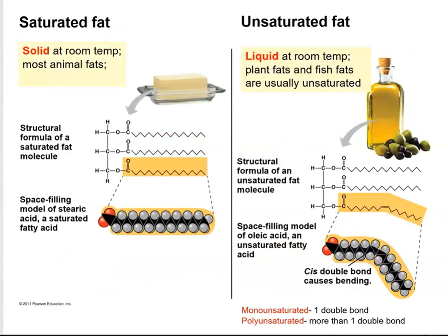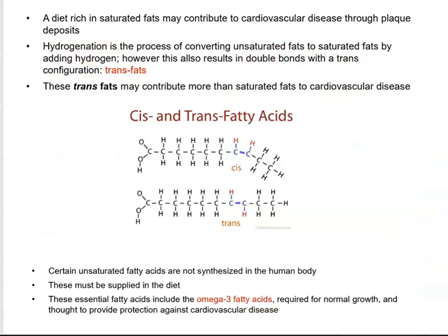What properties do we get because of the different number of bonds? Saturated fats have no double bonds, so they can compact really nice and tight. They come close together and therefore will be solid at room temperature — most animal fats are going to be solid. If you look at unsaturated fat, the double bond causes a bend or kink in that fatty acid tail, and this kink is going to prevent the fats from solidifying at room temperature, so they're going to be liquid. Regarding cis and trans fatty acids, the slight difference in the hydrogen position can actually have detrimental health effects if you consume them.